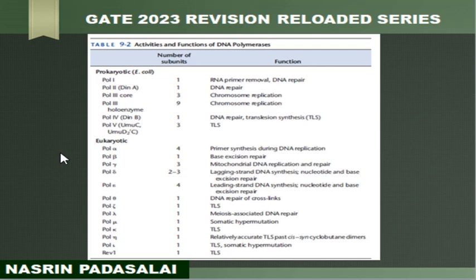Next we will be studying eukaryotic DNA polymerases. DNA polymerase alpha is involved in primer synthesis during DNA replication. DNA polymerase beta is involved in base excision repair. DNA polymerase gamma is involved in mitochondrial DNA replication and repair. DNA polymerase delta is involved in lagging strand synthesis and also in nucleotide excision repair and base excision repair. POL-epsilon is involved in leading strand DNA synthesis.